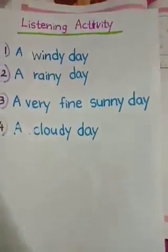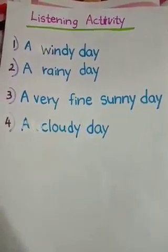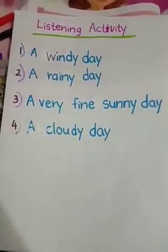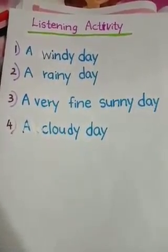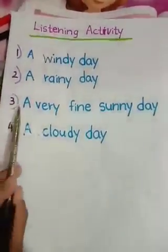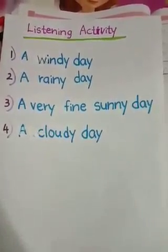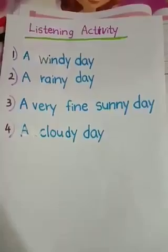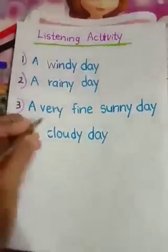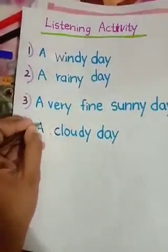Number 1 is a windy day - find the windy day picture and write number 1 in the circle. Number 2 is a rainy day - look at the rainy day picture and write number 2 in the circle. Number 3 is a very fine sunny day - find the sunny day picture and write number 3 in the circle. Number 4 is a cloudy day - find the cloudy day picture and write number 4 in the circle.